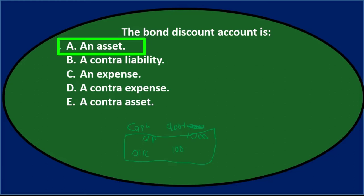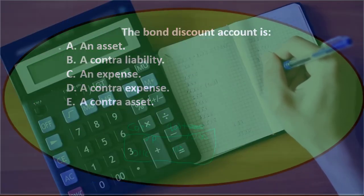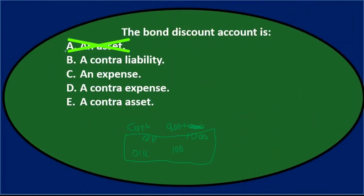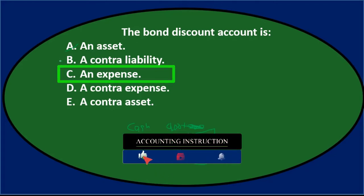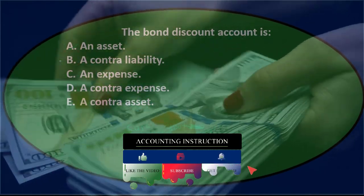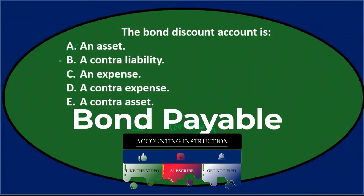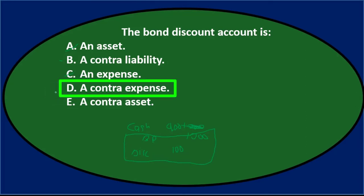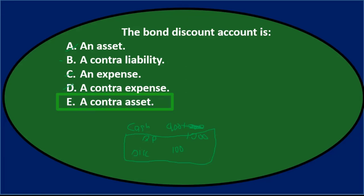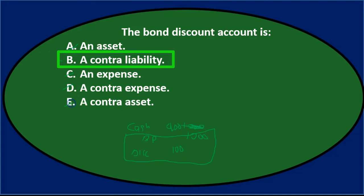Option A — an asset — doesn't fit because the discount is related to a liability account, not something we own. Option C — an expense — is tempting since we amortize the discount to interest expense over time, but the discount account itself is not an expense. Option D — a contra expense — doesn't work either since it's not an expense at all. Option E — a contra asset — makes no sense because it isn't an asset. That leaves us with B.